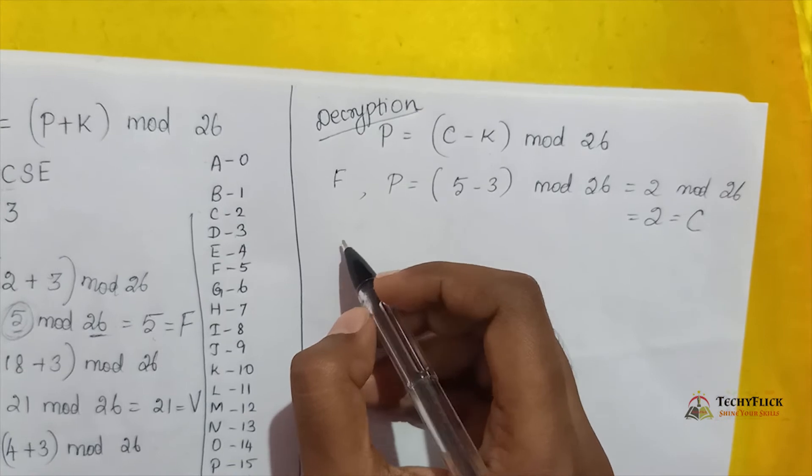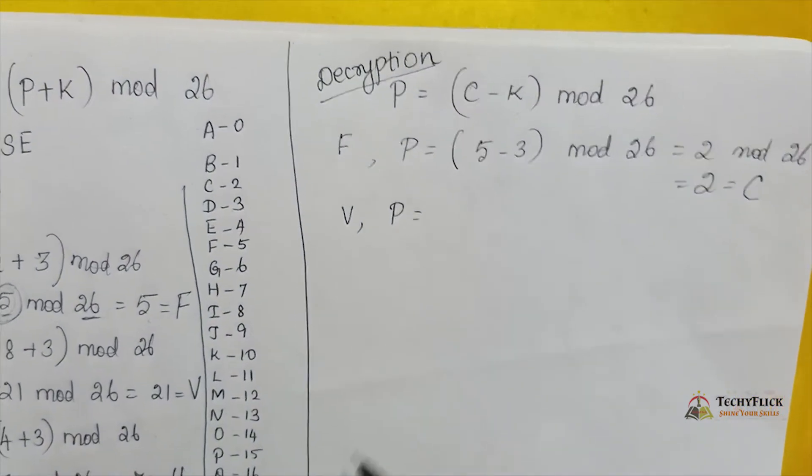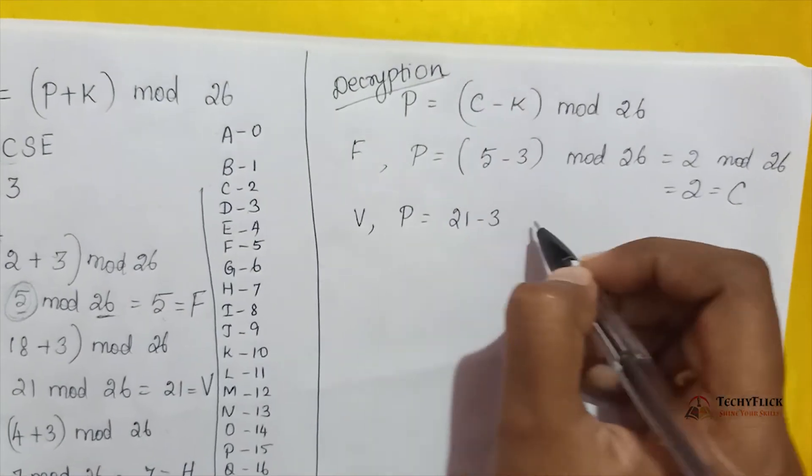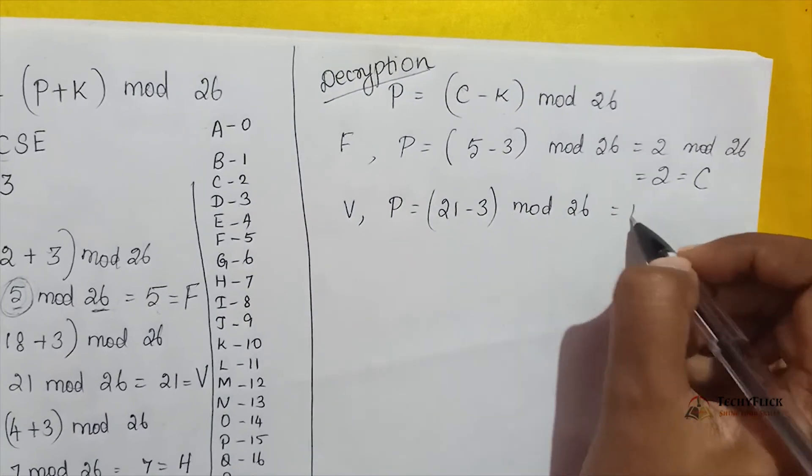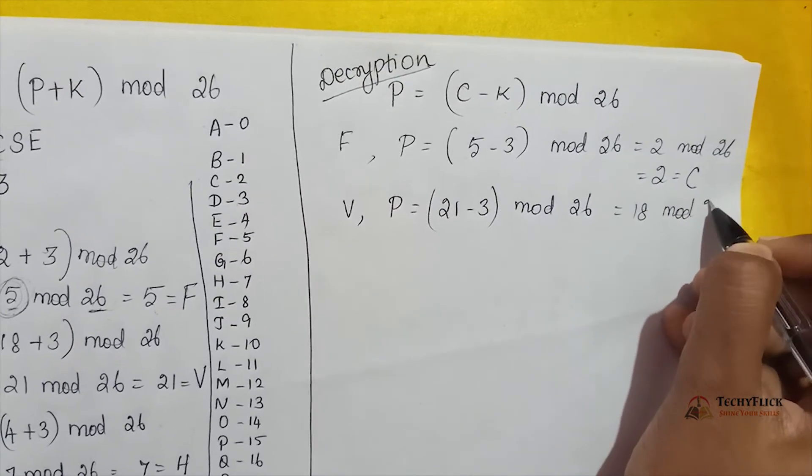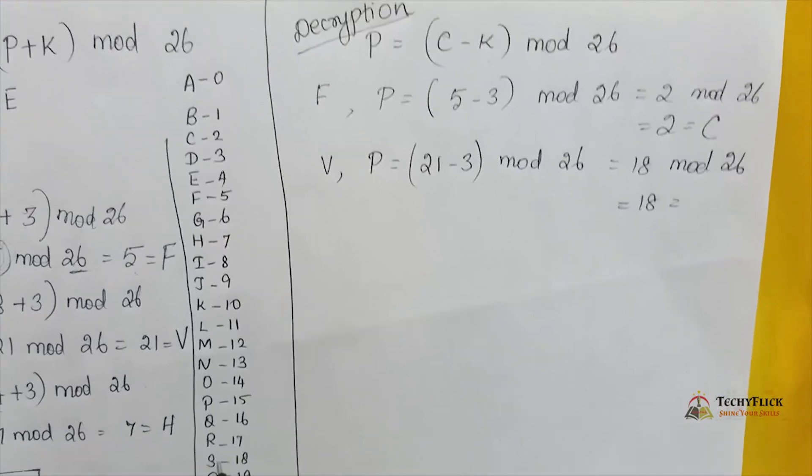Next V. P is equal to V's value which is 21, so 21 minus 3 mod 26. 21 minus 3 is 18 mod 26, so 18. 18's value is S.